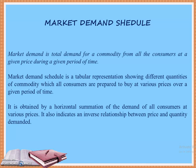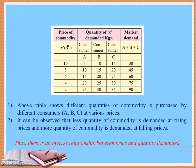The market demand schedule is obtained by horizontal summation of the demand of all consumers at various prices. It also indicates an inverse relationship between price and quantity demanded, just like the individual demand schedule.